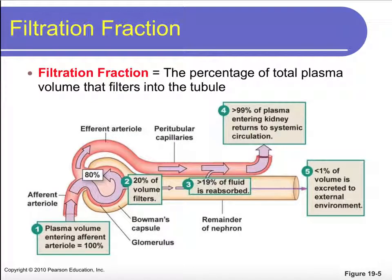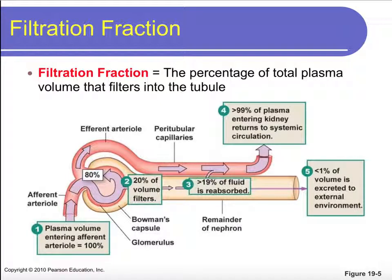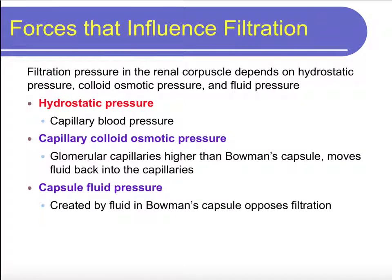The filtration fraction is the percentage of total plasma volume actually filtered in the tubule. Of 100% of blood coming to the nephron through the afferent arteriole, we only filter about 20%. About 80% stays in the capillary. But the majority of what we filter, we reabsorb — so we actually lose less than 1% of the volume to the external environment. Very little actually gets excreted — only about 1.5 liters of fluid.